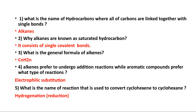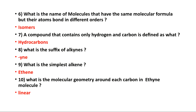Reduction in organic chemistry means increasing the number of hydrogen atoms in the compound. More questions: what is the name of molecules that have the same molecular formula but whose atoms are bonded in different orders? This is the definition of isomers — they have the same chemical formula but differ in the arrangement of atoms.